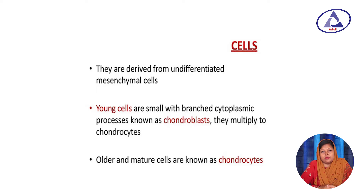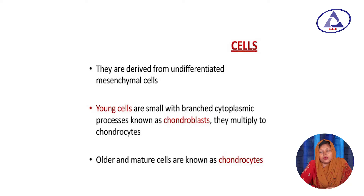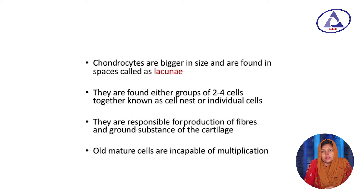Now we discuss the cells: chondroblast and chondrocyte. Chondroblasts are present just beneath the perichondrium; they are usually elliptical in shape and branched, and all these cells are derived from undifferentiated mesenchymal cells. Young cells are known as chondroblasts and mature cells are known as chondrocytes. The function of these cells is to synthesize the fiber and ground substance of the cartilage. The space or location of chondrocytes within cartilage is called lacunae.